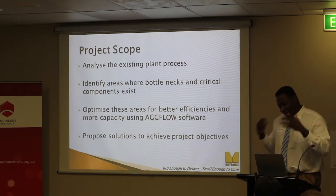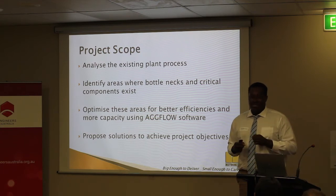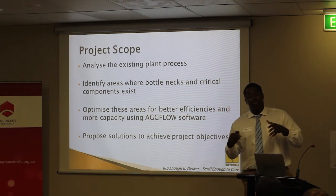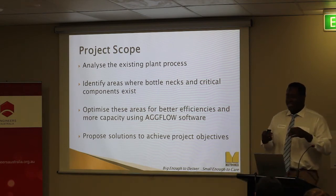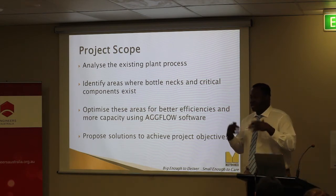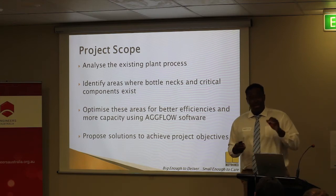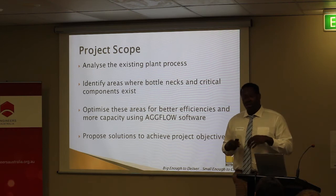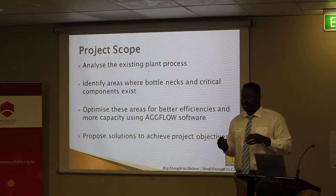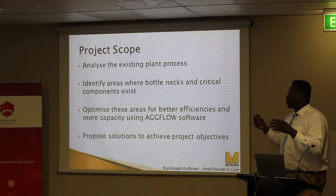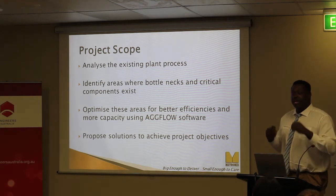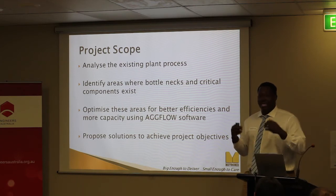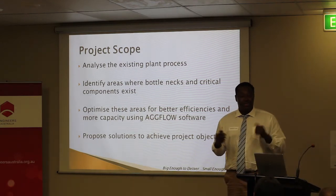So, project scope — how am I going to go about achieving this? To begin with, I looked at the existing plant footprints. I looked for bottlenecks, critical components, and areas that needed their efficiency and capacity to increase. Then I used a flowchart simulation program called Agflow, where I modeled the plant process. I want to run some simulations to get the performance shown in my objective slide, and if I get that performance, I can propose some solutions to the problem.